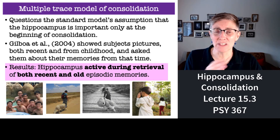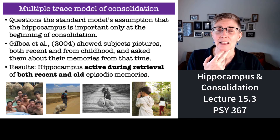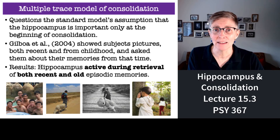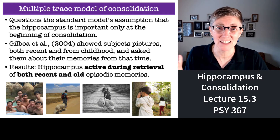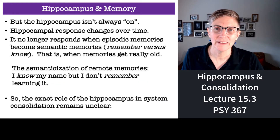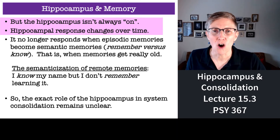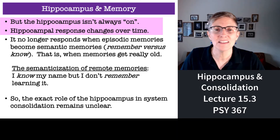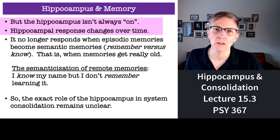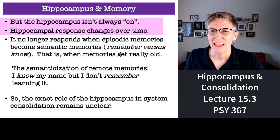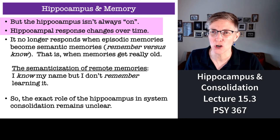That's not what the standard model would have predicted — it would predict the hippocampus is active for new memories but not old ones, since those have already been consolidated. To complicate things further, the hippocampus is not equally active during recall of old and new memories. Instead, what the hippocampus is doing seems to change over time.